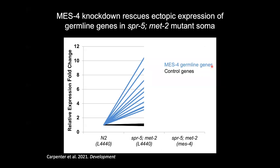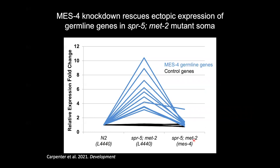We thought MES4 might be the culprit. Using RT-PCR and RNAi, we asked: if we knock down maternal MES4, could we rescue the expression of these germline genes? I picked a handful of MES4 germline genes upregulated in SPR5 MET2 L1 larvae from our RNA-seq, plus control genes including AMO1, Actin1, and somatic-specific genes. On control RNAi, MES4 germline genes are all ectopically expressed, with no changes in control genes. When we knock down MES4 in the parents, eight to nine of these genes come back down to wild-type levels — convincing us that the ectopic expression depends on the presence of MES4.